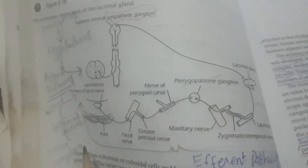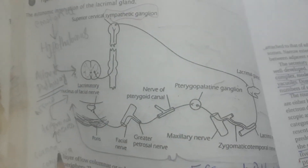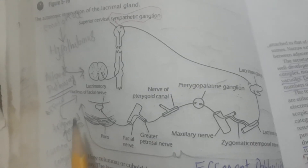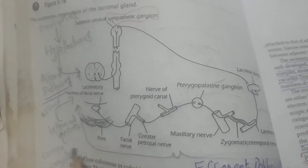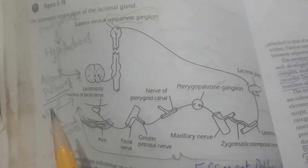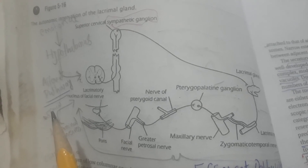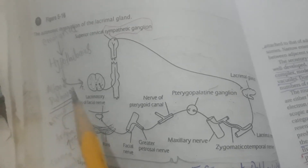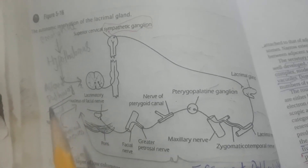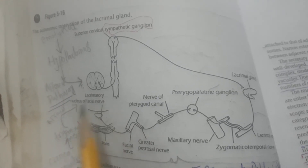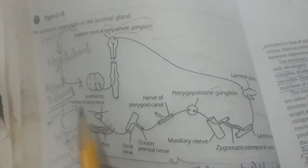If foreign bodies are present in the conjunctiva or cornea, the nerve endings of the trigeminal nerve present on the cornea are stimulated, which in turn stimulate the lacrimatory nucleus of the facial nerve.